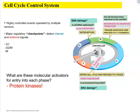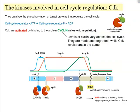What are the molecular activators for entry to each phase? The answer is protein kinases — the proteins able to phosphorylate other proteins and initiate the phosphorylation cascade to activate or inactivate target proteins. The kinases involved in cell cycle regulation are called cyclin-dependent kinases, or CDKs. They catalyze phosphorylation of proteins involved in cell cycle regulation, but kinases alone are not active — they need to be activated by cyclins.